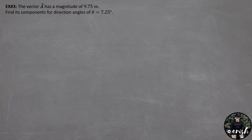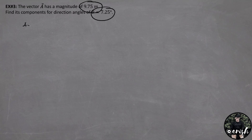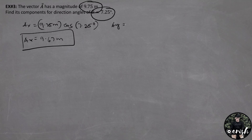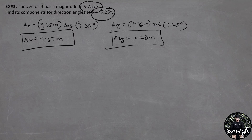Example number 3: The vector A has a magnitude of 9.75 meters. Find its components for direction angle theta equals 7.25 degrees. This is a conversion of magnitude and angle to the components of the vector. For Ax: 9.75 meters times cosine 7.25 degrees, giving Ax equal to 9.67 meters. For Ay: 9.75 meters times sine 7.25 degrees, giving Ay equal to 1.23 meters. So these are the components for vector A.